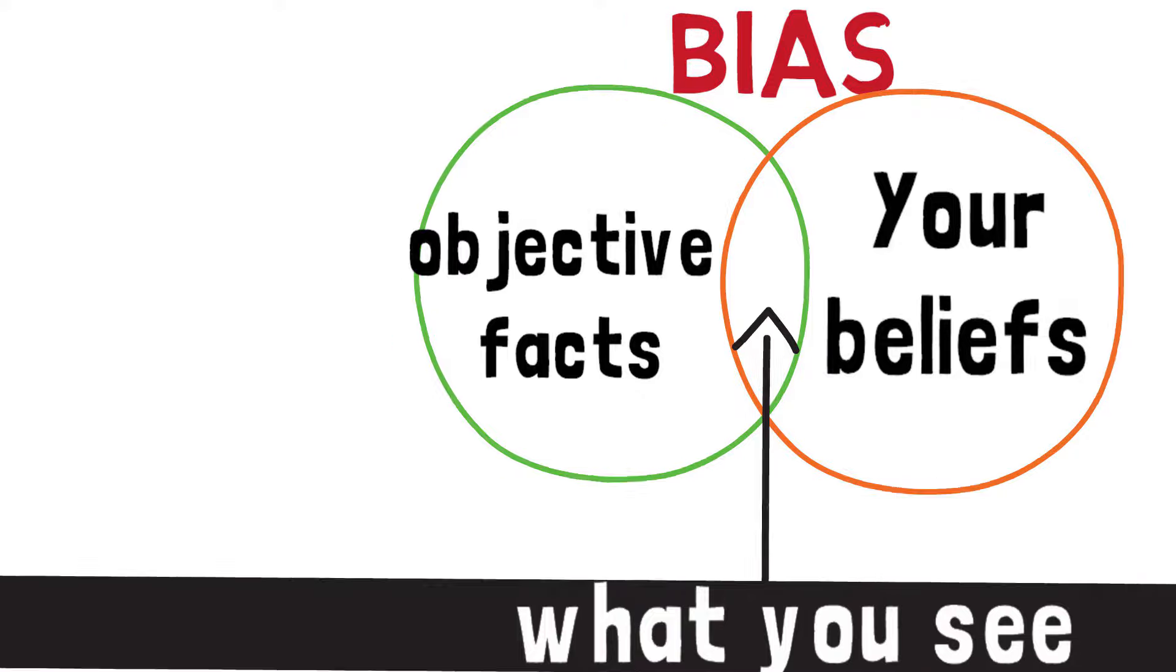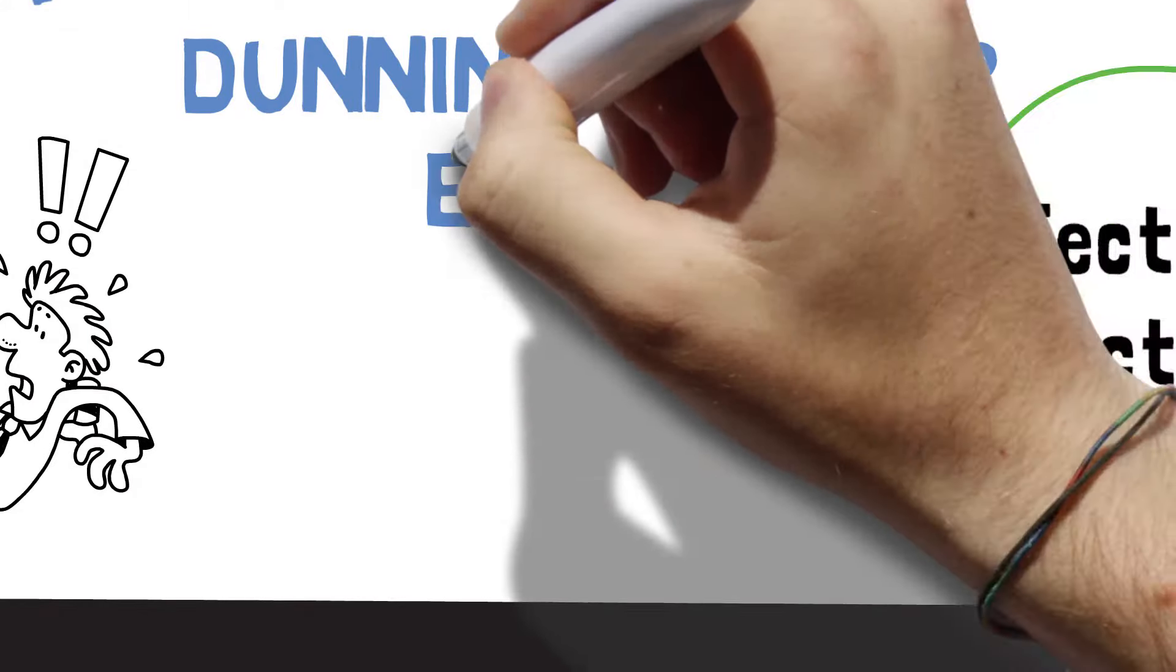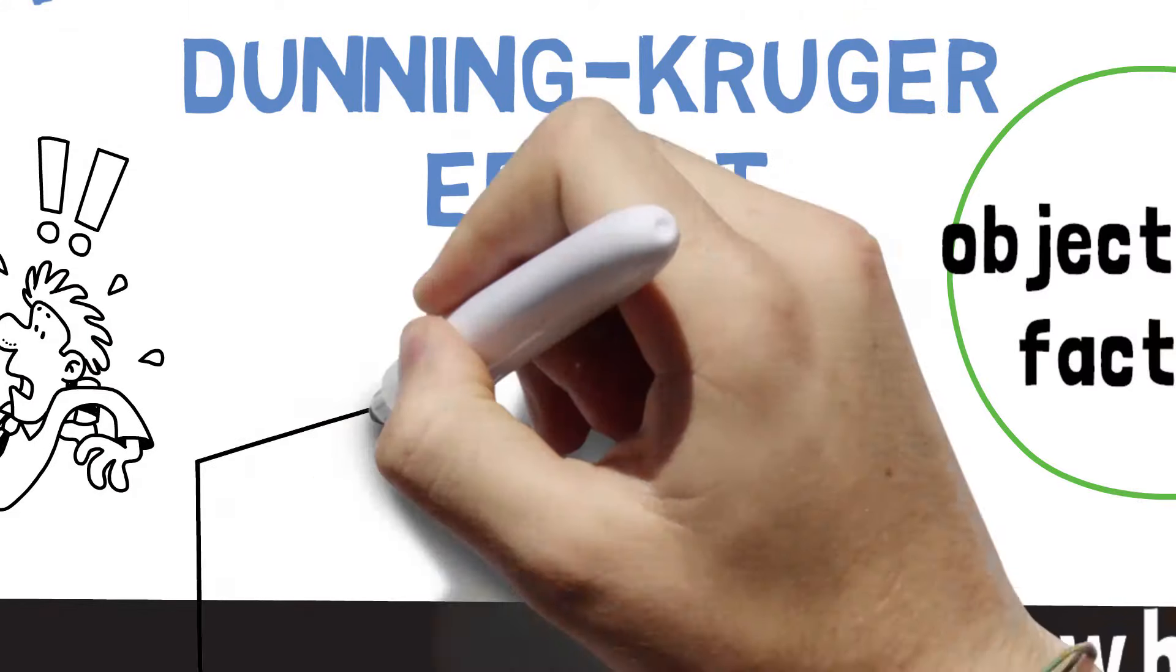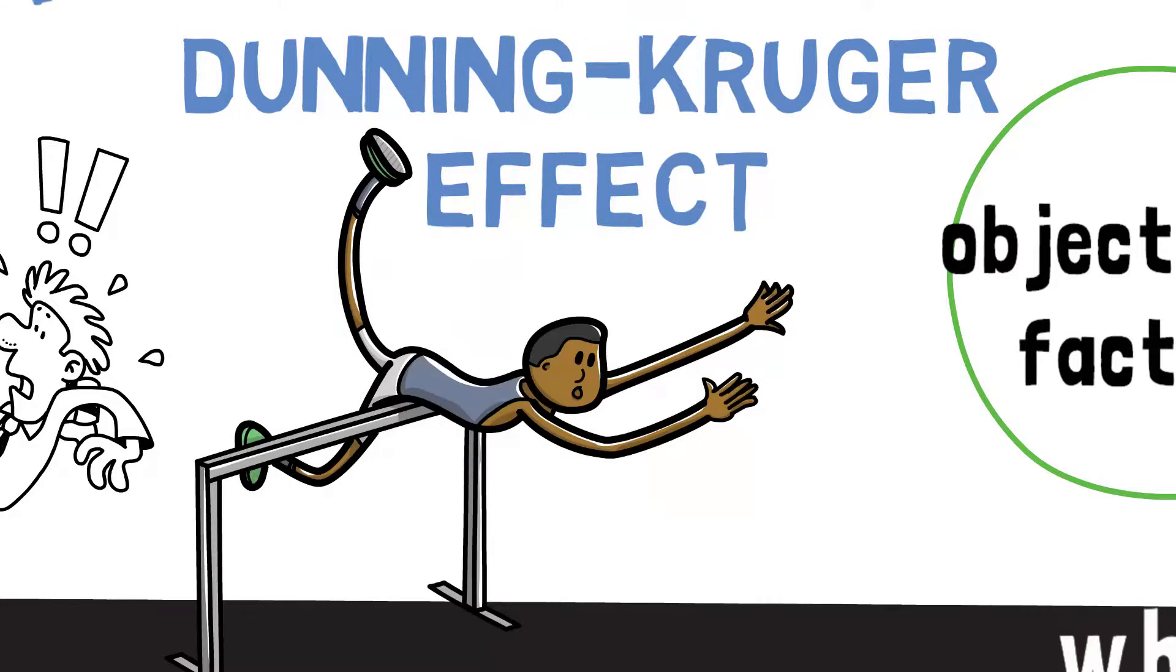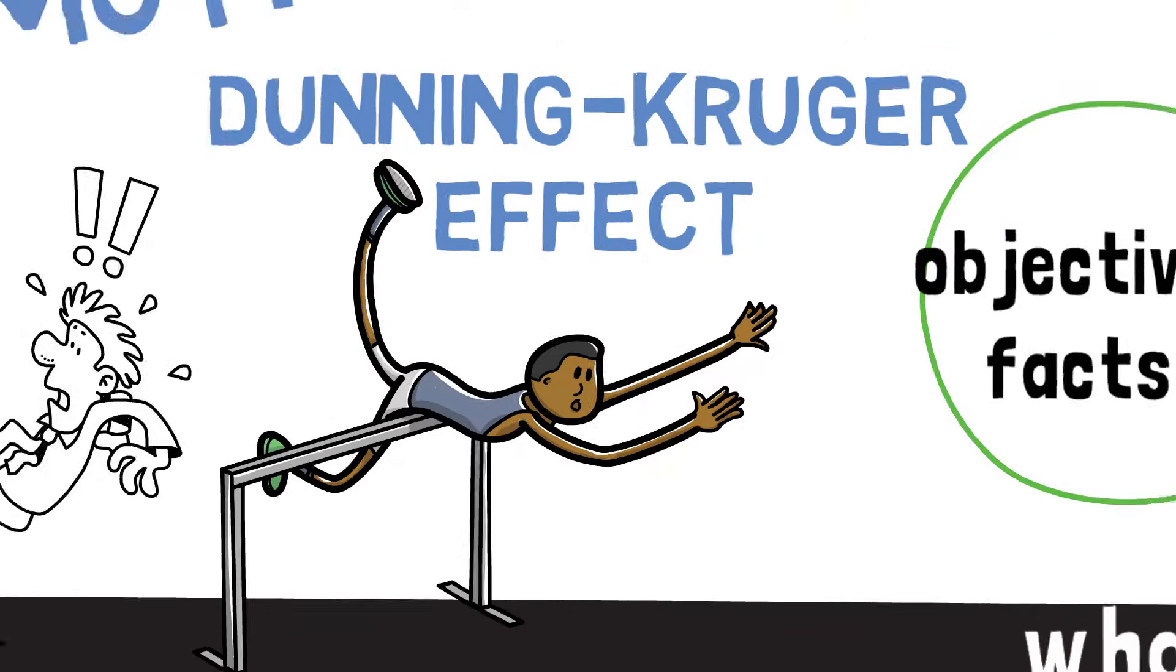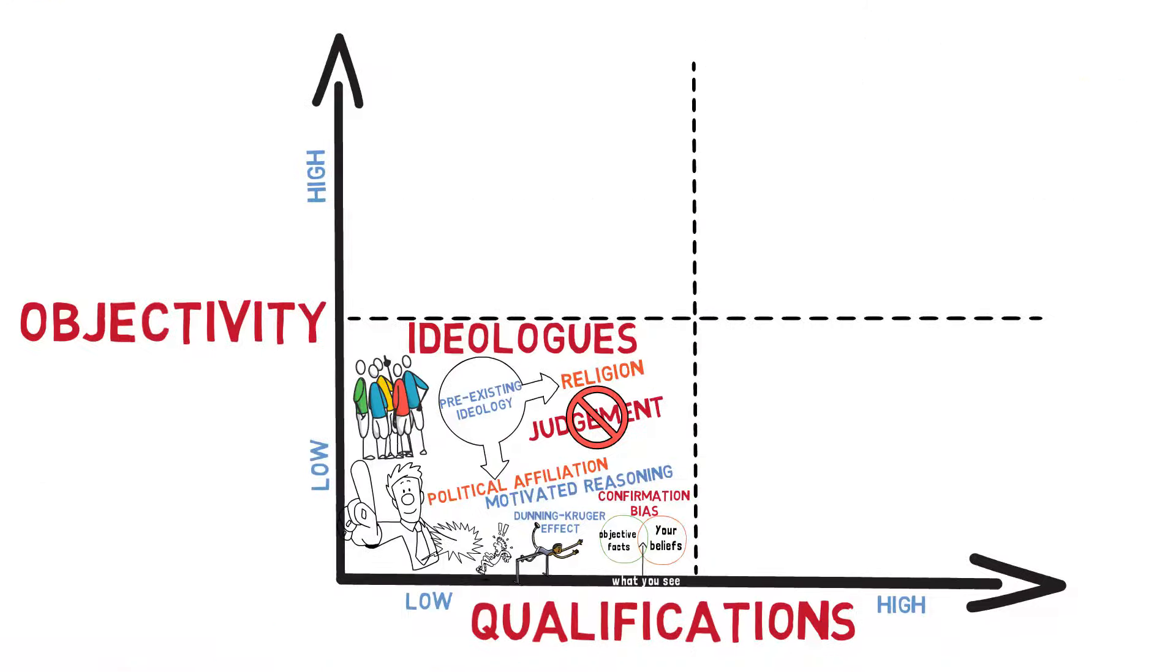We also see what's called the Dunning-Kruger effect. And basically this means that the less competent a person is in an area, the more likely they are to overestimate their own competency in that area. Politicians do this all the time.